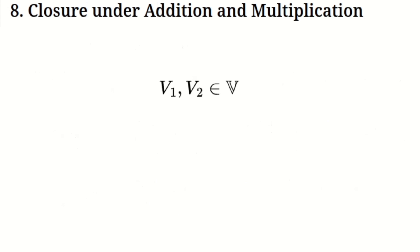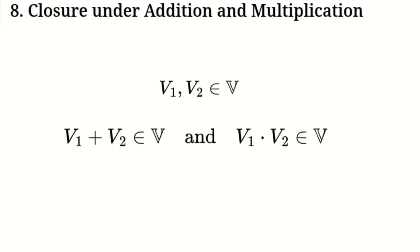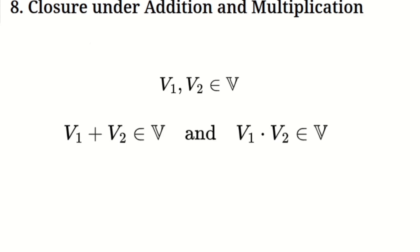Closure under addition and multiplication. The virtual number system is closed under both addition and multiplication. This means that no matter how you add two virtual numbers or multiply two virtual numbers together, the result will always be another virtual number. For example, let's consider two virtual numbers, V1 and V2. If we add V1 and V2 together, we get a new virtual number, V3. Similarly, if we multiply V1 by V2, we get another new virtual number, V4. In both cases, the result stays within the virtual number system, which shows that the system is closed under both operations.